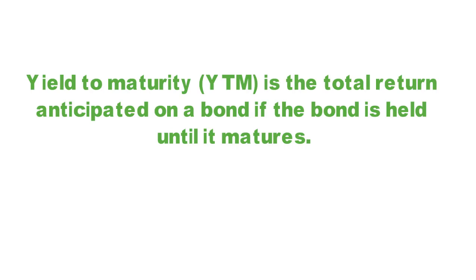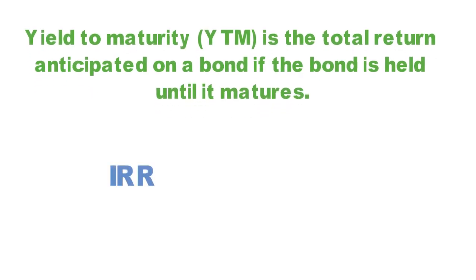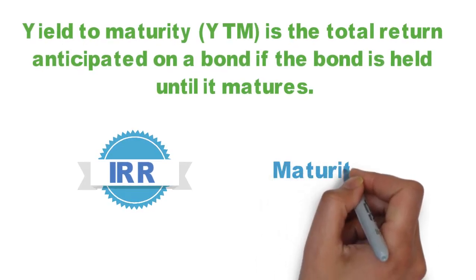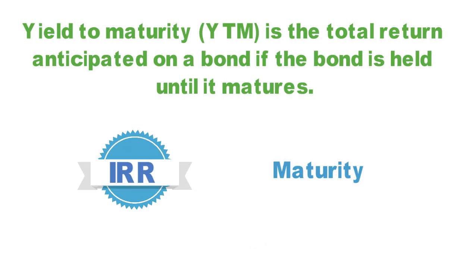Yield to maturity, also known as YTM, is the total return anticipated on a bond if the bond is held until it matures. In other words, it is the internal rate of return of an investment in a bond if the investor holds the bond until maturity, with all payments made as scheduled and reinvested at the same time.